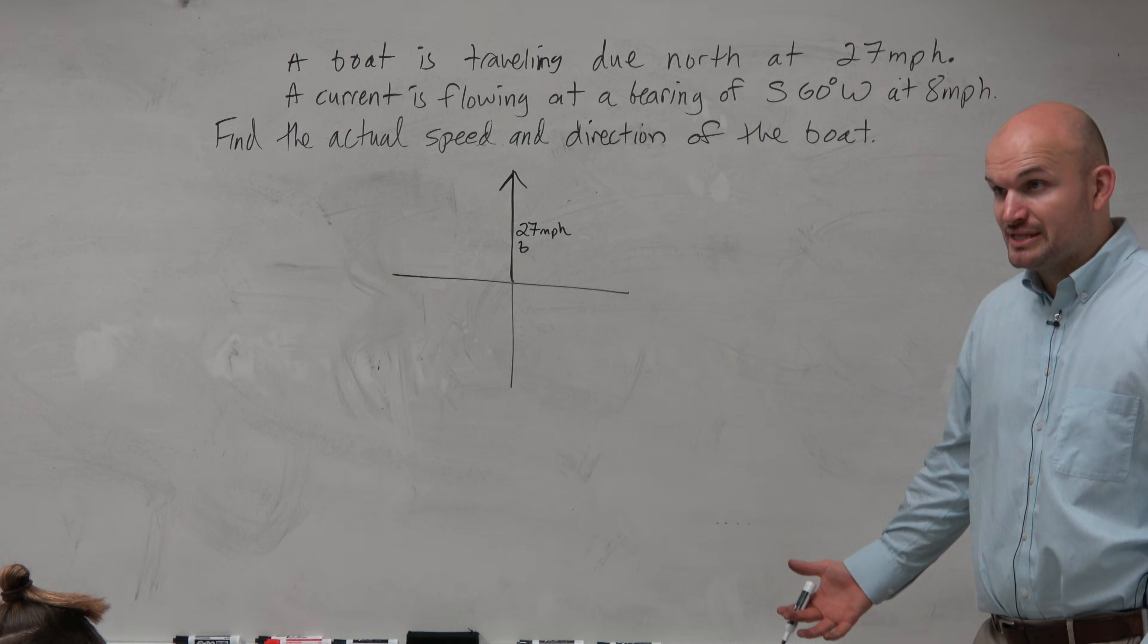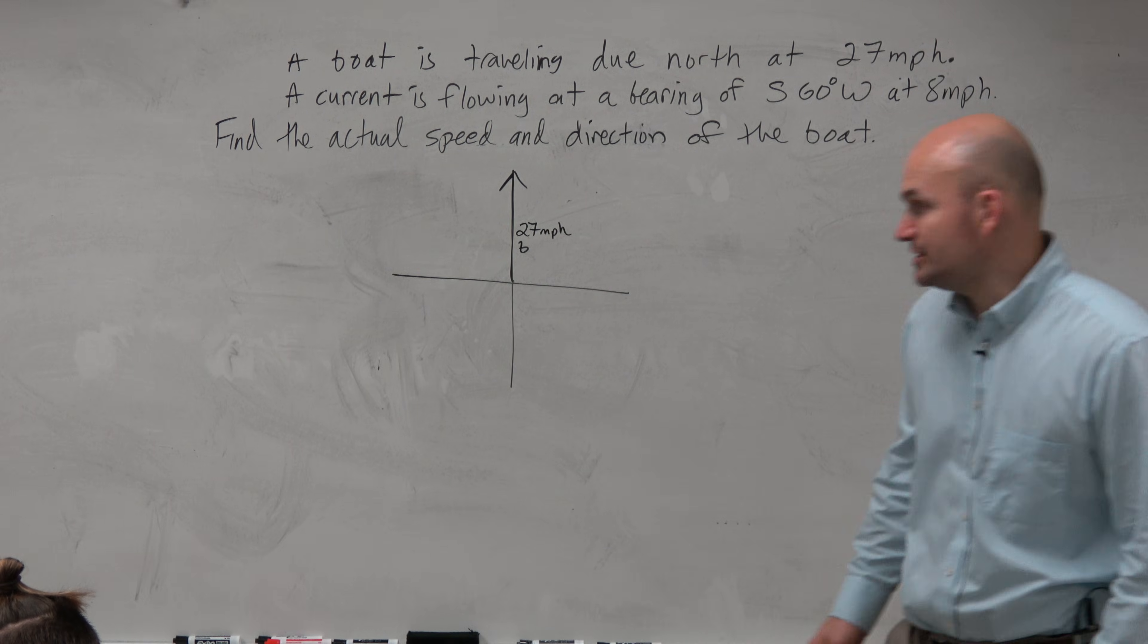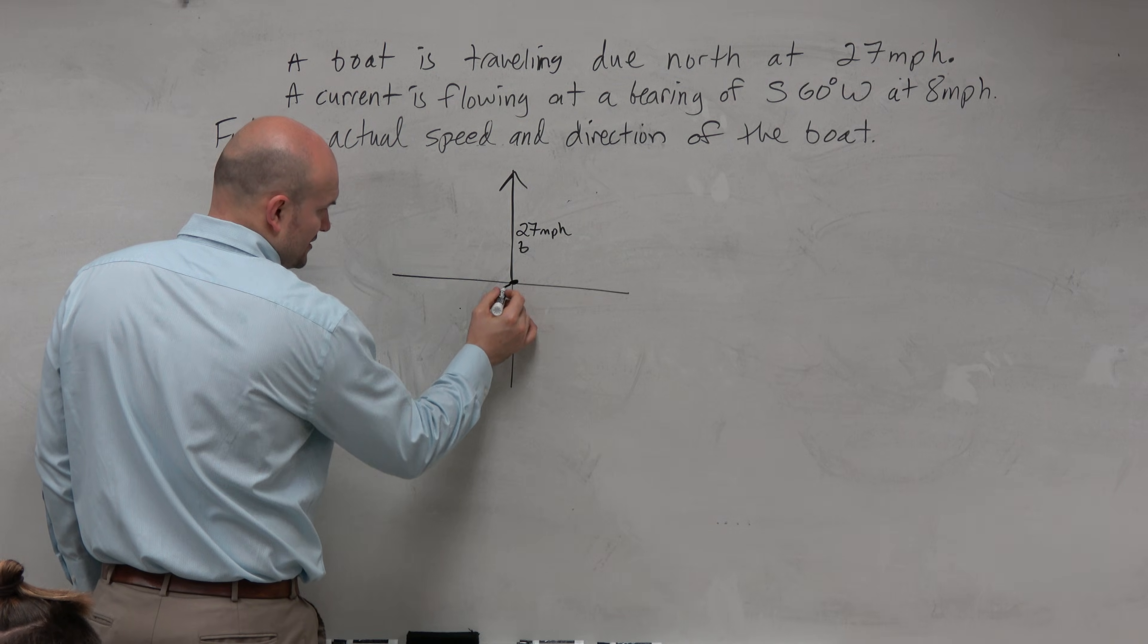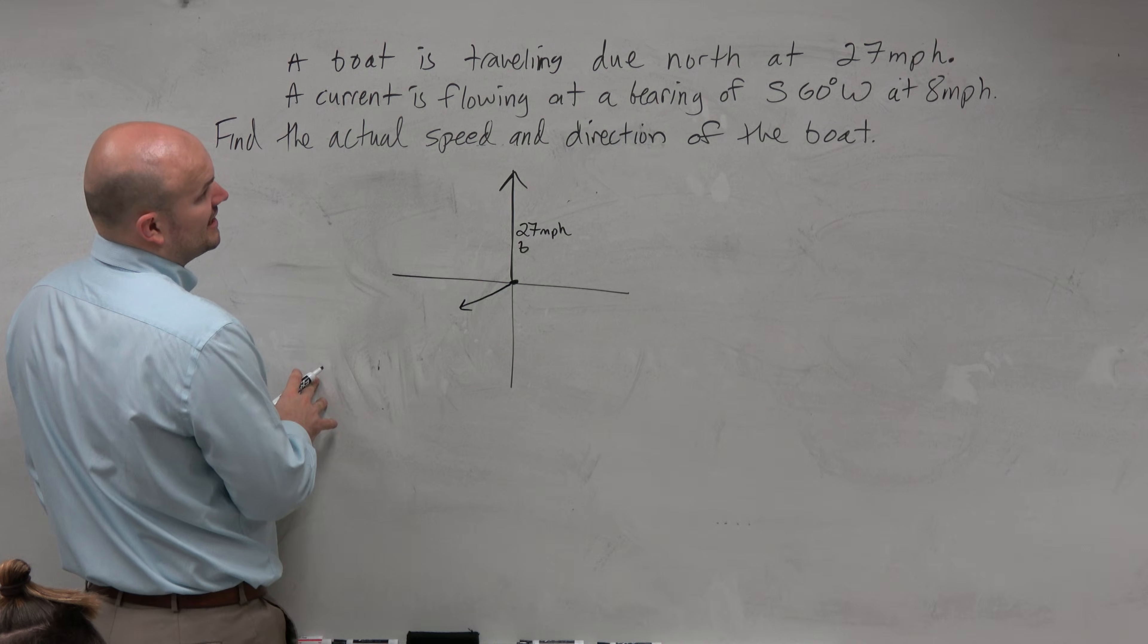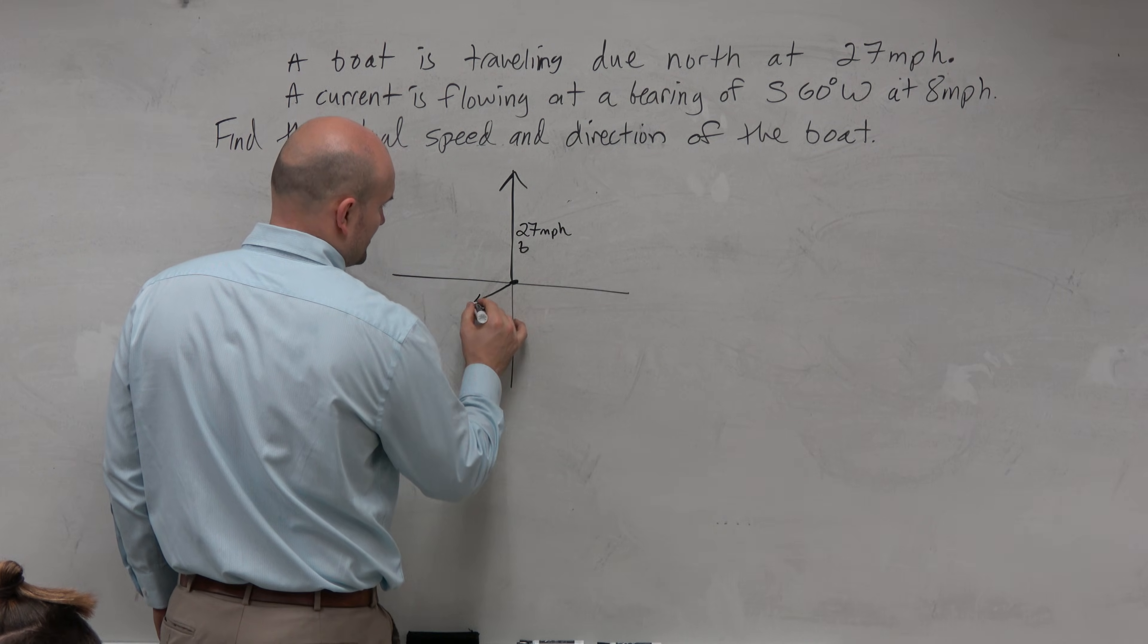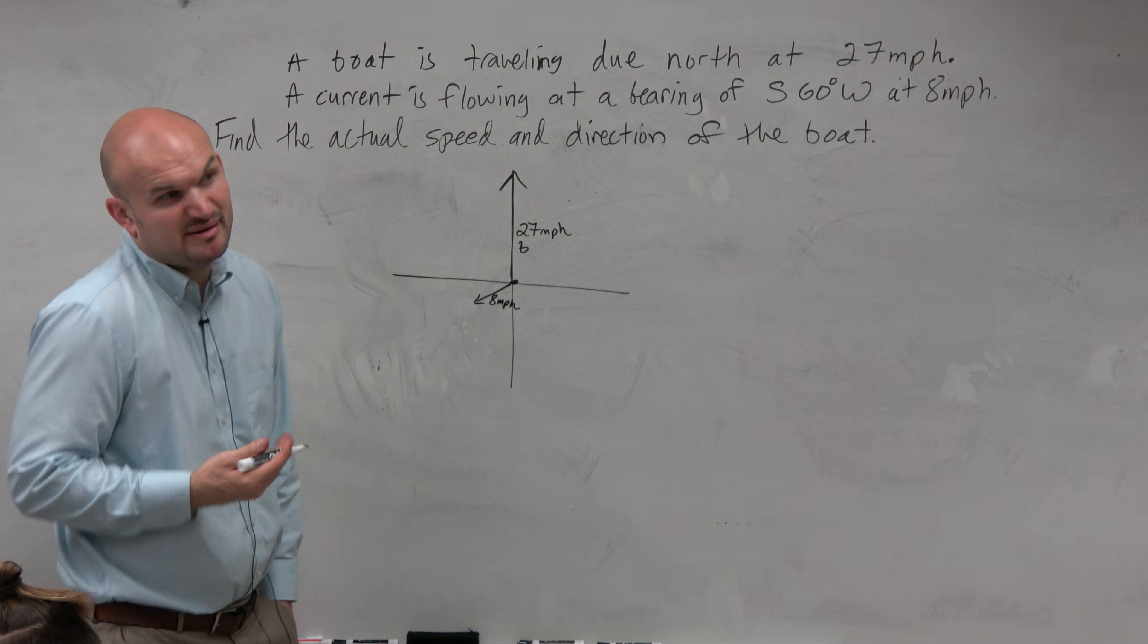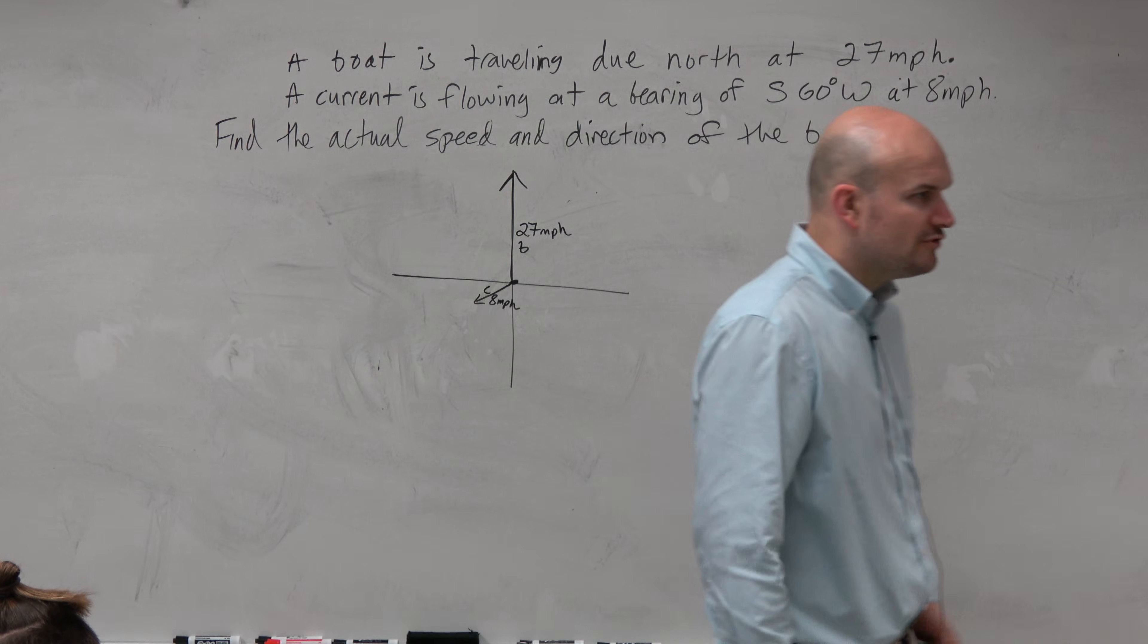Now, in addition to that, we also have a current that is flowing at a bearing of south 60 degrees west. So we have south 60 degrees west. So that's going to look something like this. And that's significantly smaller, because that only has is going 8 miles per hour. So let's do this a little bit smaller. And let's do 8 miles per hour. Now, what should we label that? Maybe C? Sure, sounds good to see, for current.